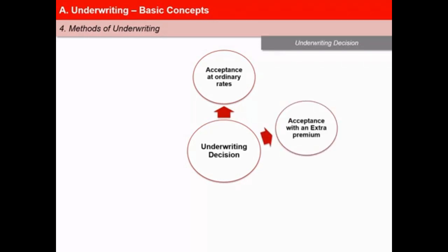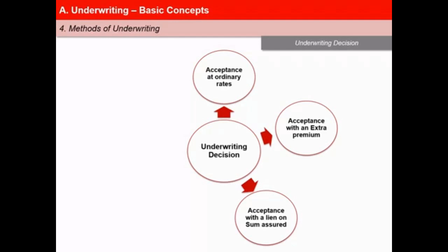Second, acceptance with an extra premium — the most common way of dealing with the large majority of substandard risks, involving charging extra premium over the tabular rate. Third, acceptance with a lien on the sum assured. A lien is a kind of hold which the life insurance company can exercise in part or whole on the amount of benefit to be paid in the event of a claim. For example, if the life insured dies from a specified cause such as relapse of TB within a given period, only a decreased amount of death benefit would be payable.